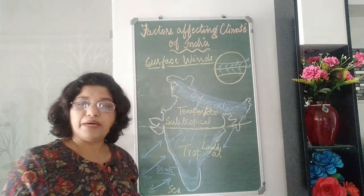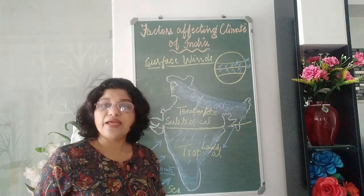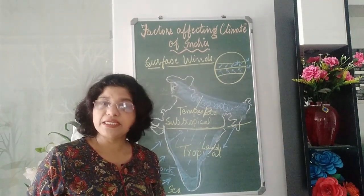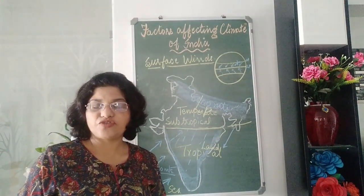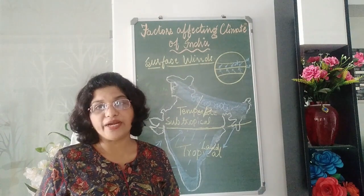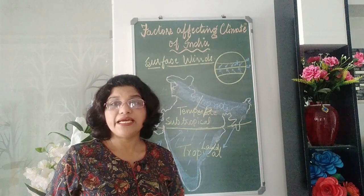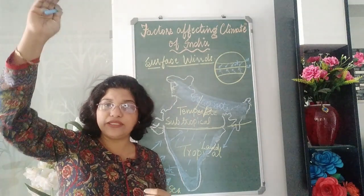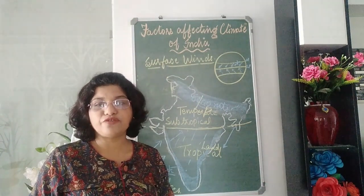Next we will deal with upper air circulation, which relates to jet streams. There are many jet streams on the globe, but the jet streams which affect India's climate are the westerly jet streams and the easterly jet streams. Jet streams are winds which move at a very great speed — 110 to 180 km per hour. They are not surface winds; they move at a very high altitude in the troposphere, about 12,000 meters, and they also affect the climate of India.